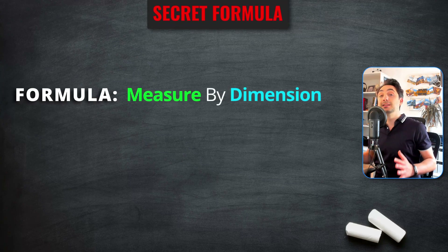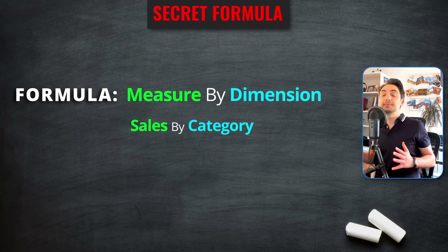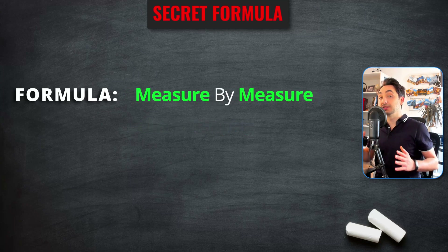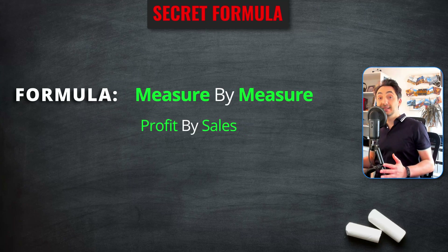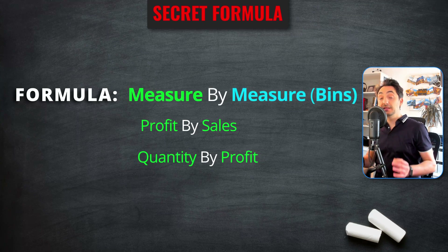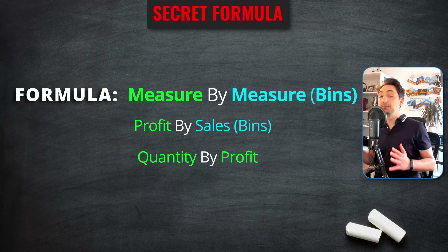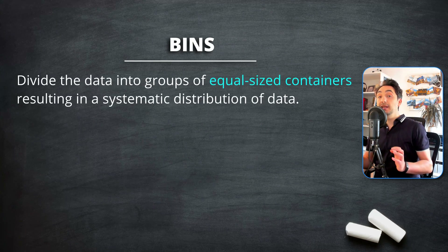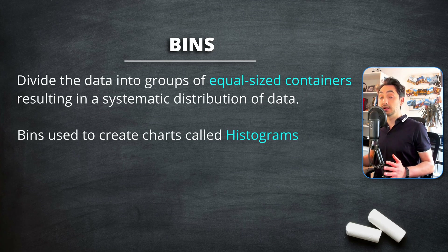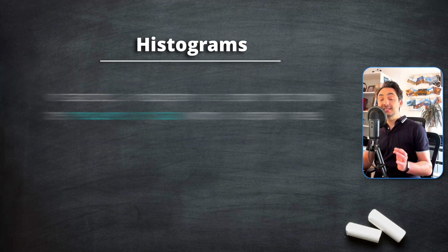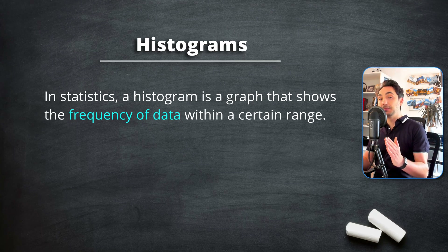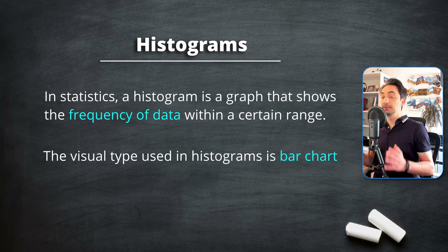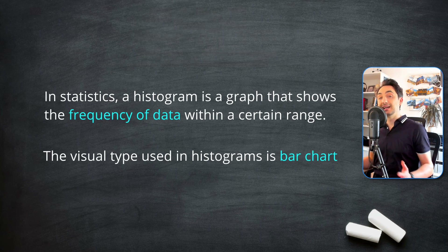Before, as we learned dimensions and measures, we learned the secret formula of building new views: measure by dimension, like sales by category. But sometimes we have to build a view from two measures — measure by measure, like profit by sales or quantity by profit. One way to do that is by converting one of those measures to bins. Bins divide the data into groups of equally sized containers, resulting in a systematic distribution of the data, and we can use those bins to create charts called histograms.